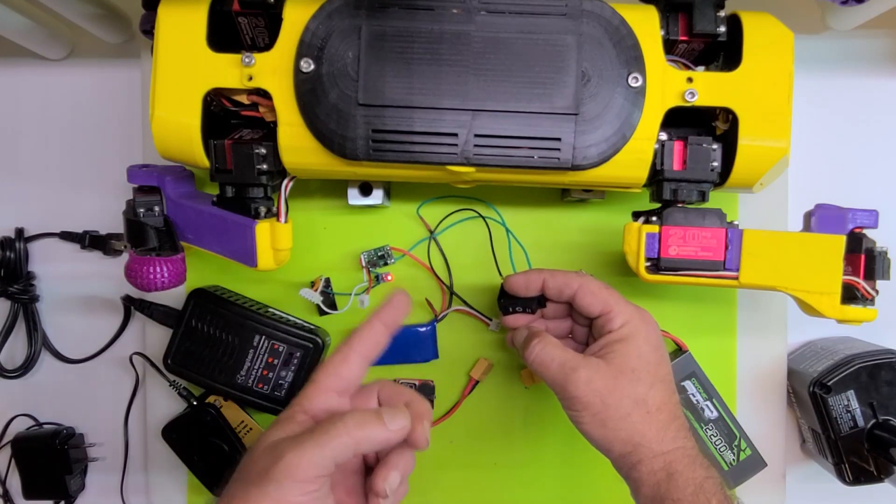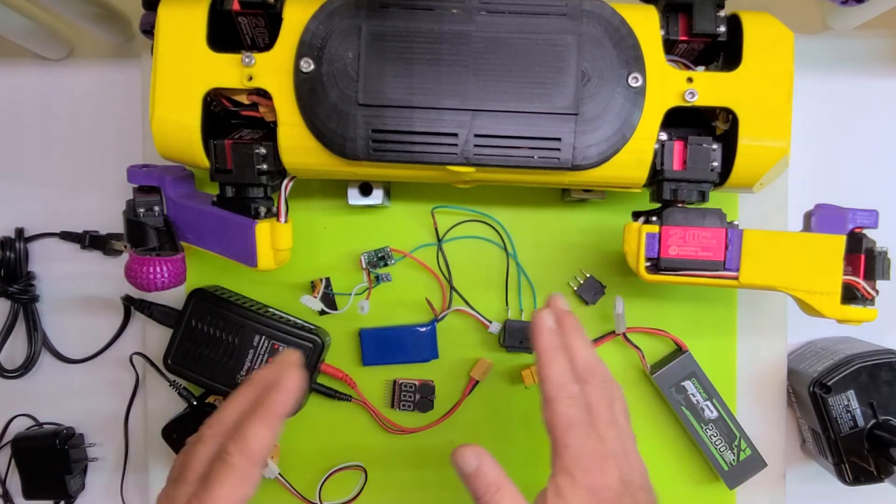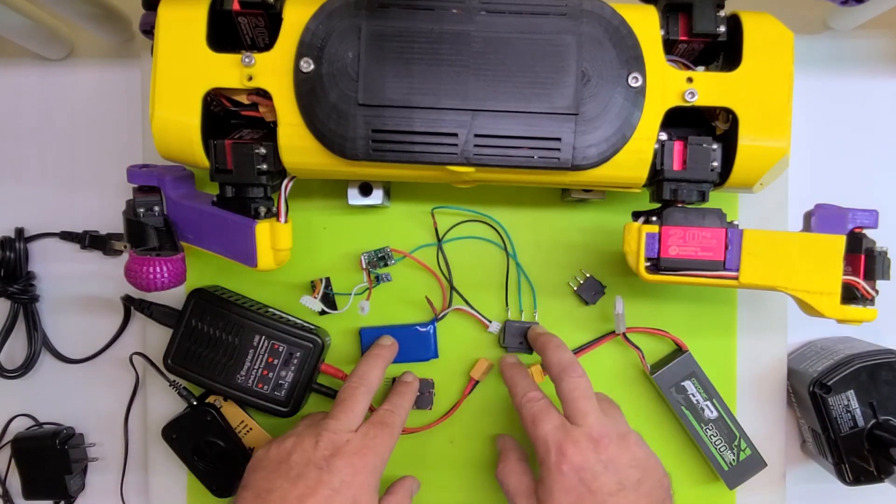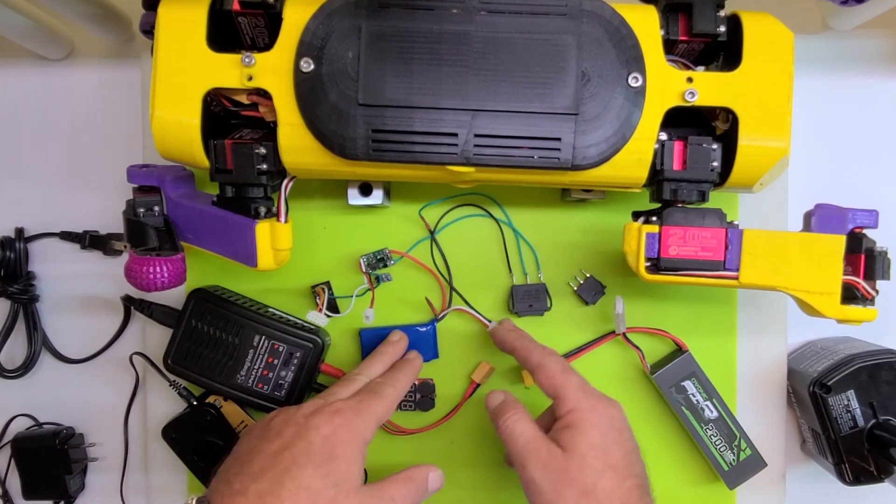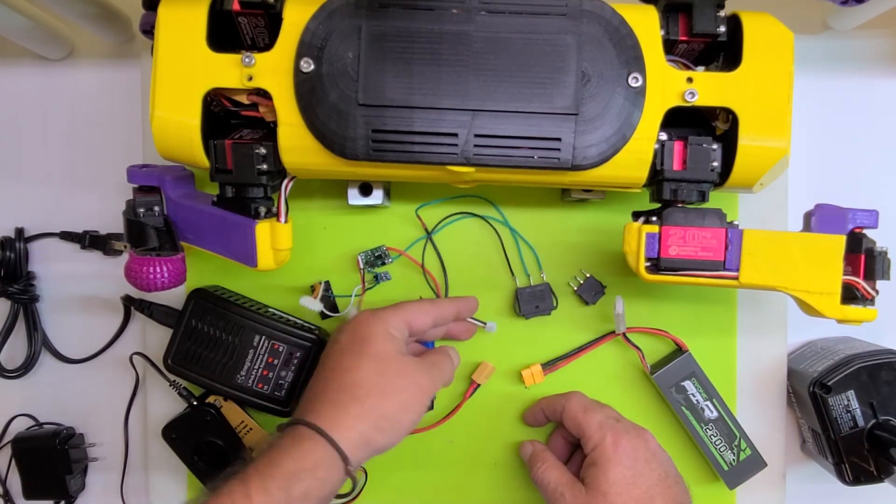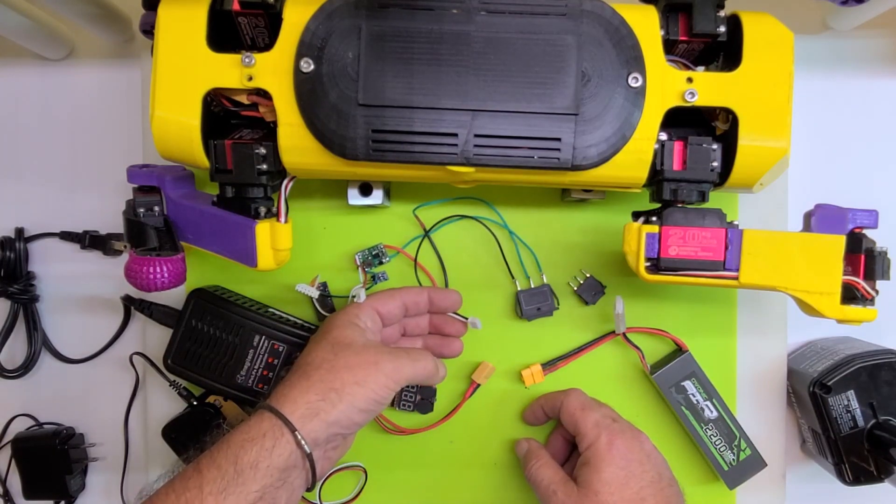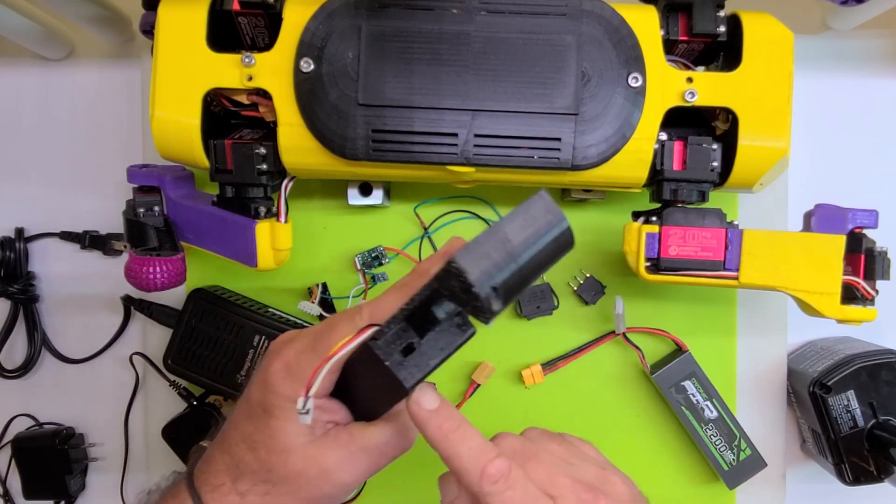And then one side goes to the JST to charge and the other side goes to our regulator to power our device. So if I switch this to this side it would be ready for charging, I could plug it into the charger. If I switch it the opposite way then it powers our device. Okay, so again not the best solution, not the safest solution.